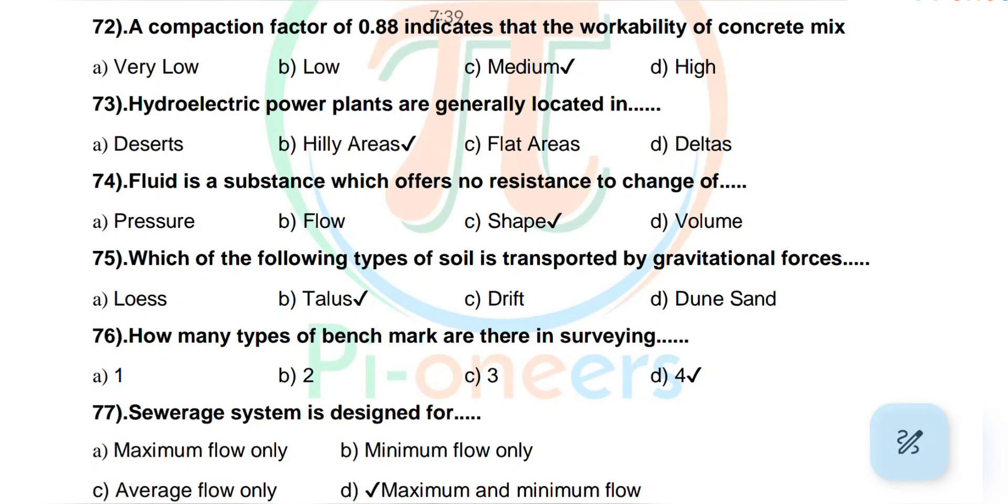Question number 73: Hydroelectric power plants are generally located in desert, hilly areas, flat areas, or valleys. Correct answer: hilly areas. Question number 74: Fluid is a substance which offers no resistance to change of pressure, flow, shape, or volume. Correct answer: shape.